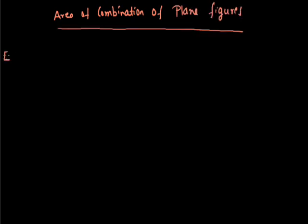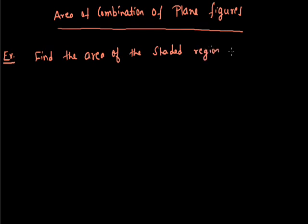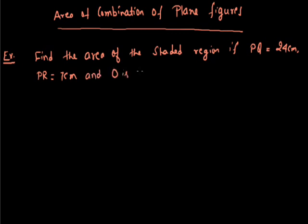Now in this first example, find the area of the shaded region. PQ is equal to 24 cm, PR is equal to 7 cm, and O is the center of the circle.